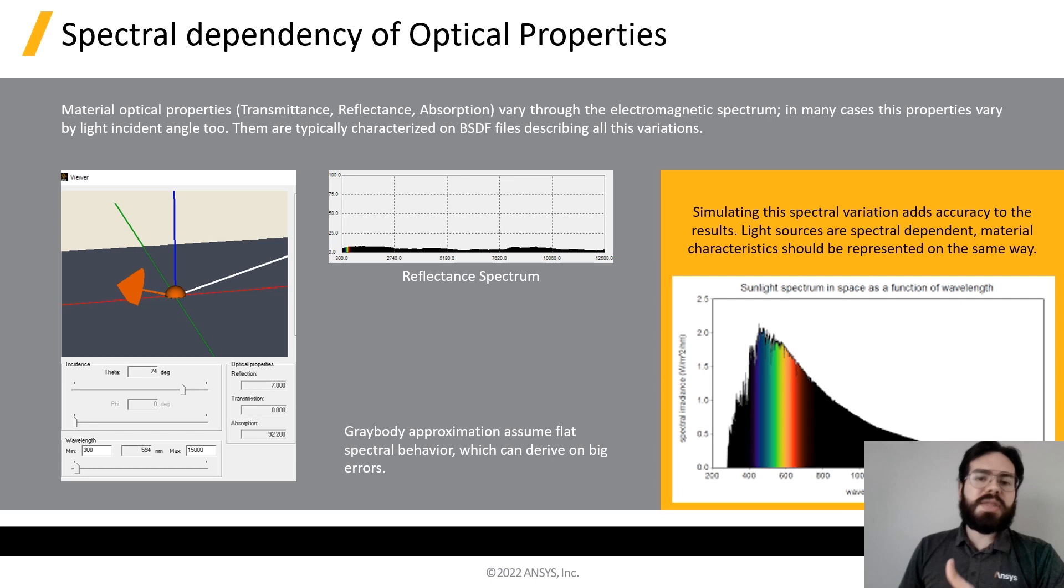The behavior of the incident energy varies through the electromagnetic spectrum. For example, a material can be very absorptive on the UV spectrum, but it can have a very low absorption on the infrared side, and vice versa. Same happens with the angle of incident of this energy.